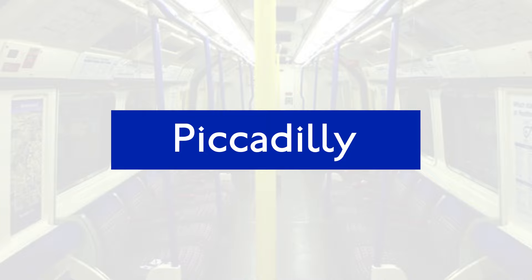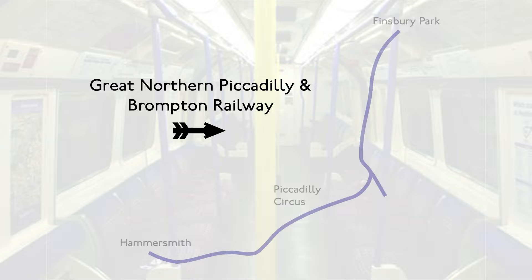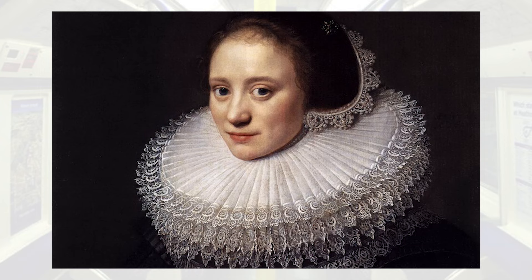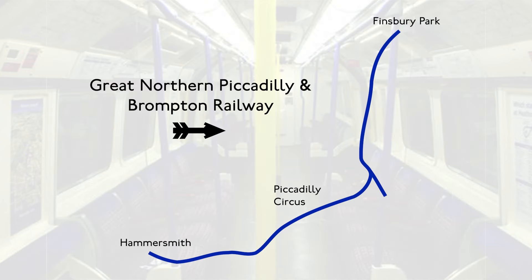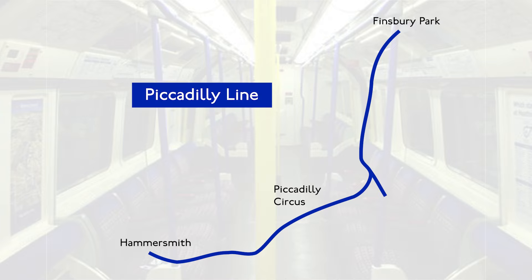In the same year, 1906, the Piccadilly Line was originally called the Great Northern Piccadilly and Brompton Railway, running between Finsbury Park and Hammersmith. The word Piccadilly itself comes from the word Piccadill, which was a large lace collar fashionable in the 16th century. People referred to the line as the Piccadilly Railway from the start, and thus it later became the Piccadilly Line.